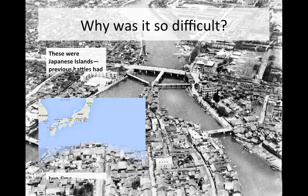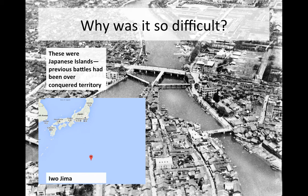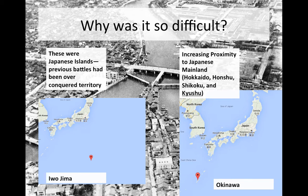Why were these battles so difficult? Here is a map of Iwo Jima on the left and Okinawa on the right — notice the proximity of the two islands to the Japanese mainland. Unlike Guadalcanal, Mindanao, or Midway, Iwo Jima and Okinawa were Japanese islands — Japanese territory, sovereign to the Japanese people. So the fighting would be much more intense and severe on these islands, hence the larger number of casualties.